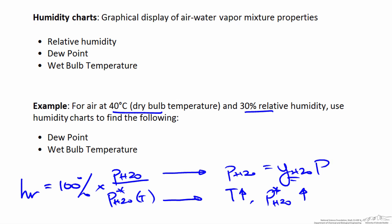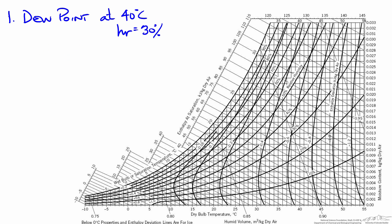First we'll tackle the dew point. We'll go straight to the humidity chart to find where we are and how we find the dew point. The dry bulb temperature is found on the x-axis of the chart — here we know it is 40 degrees. The relative humidity can be found on the sweeping curves across the chart, and here we know our relative humidity is 30%. So if we find the intersection of 40 degrees dry bulb and 30% relative humidity, our air is at that point on the humidity chart.